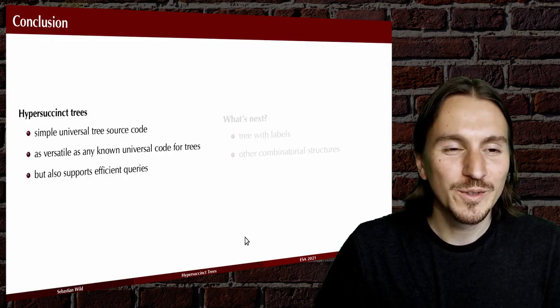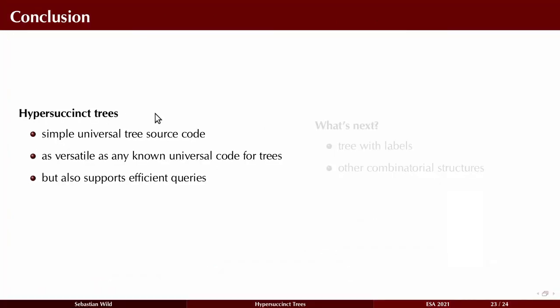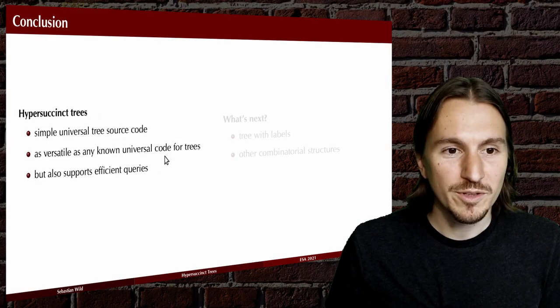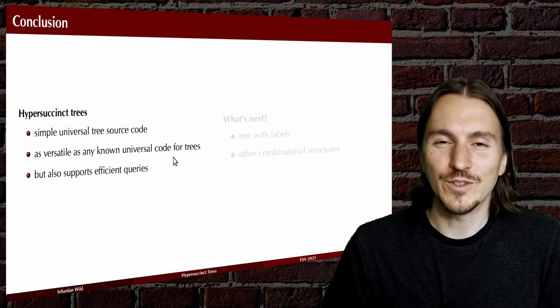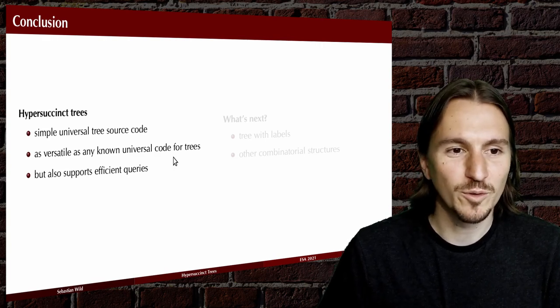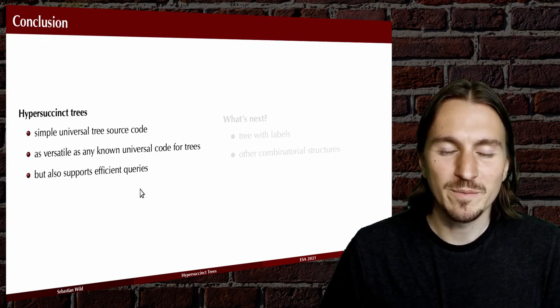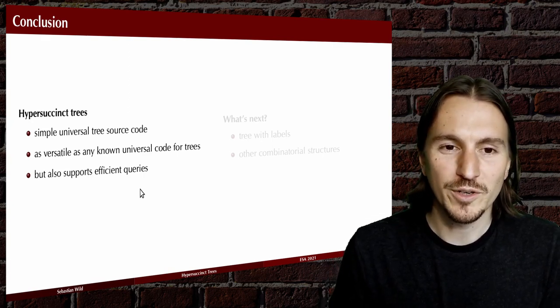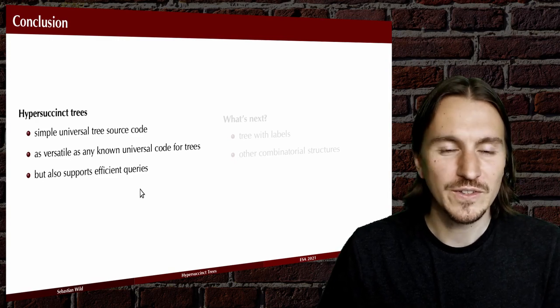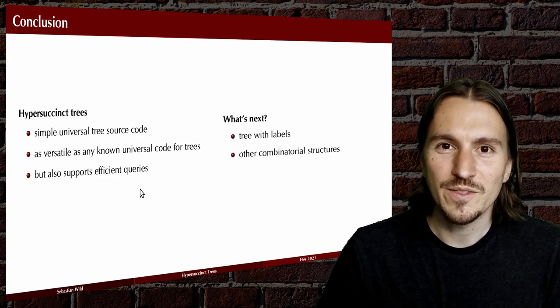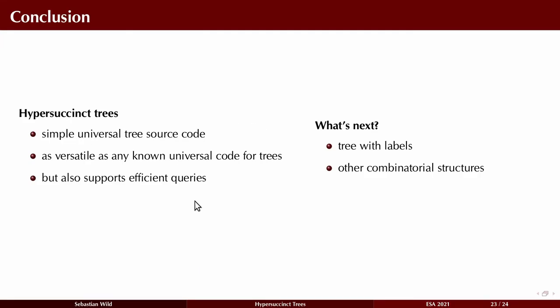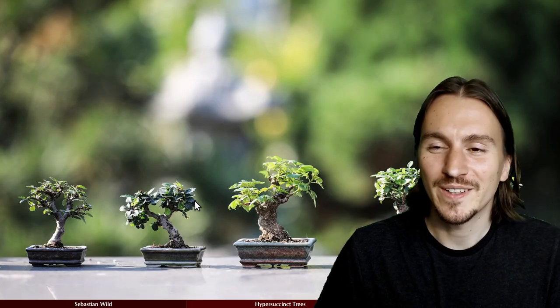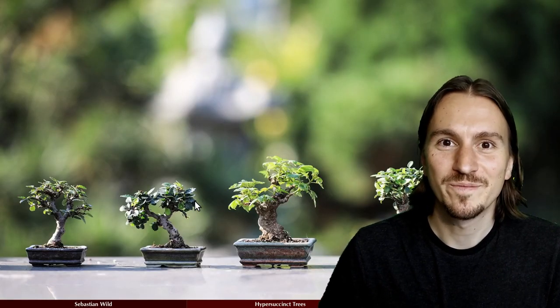With that, I want to conclude. I've shown you hyper succinct trees, which are very simple if you're just after a source code for trees. But they're as versatile as any of the other known universal source codes for binary trees that have been presented before. And at the same time, they can be transformed into a data structure using the tree covering techniques for supporting all sorts of operations in constant time. We'd like to extend this to trees with labels and other combinatorial structures. This is ongoing work. Thanks for your attention and hope to answer questions in the ESA sessions.